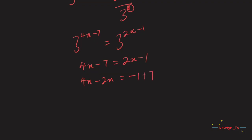Then we get 2x should be equal to 6. Then we divide each side by 2 — 2 goes into both sides — so 2 cancels 2, giving us x should be equal to 3.